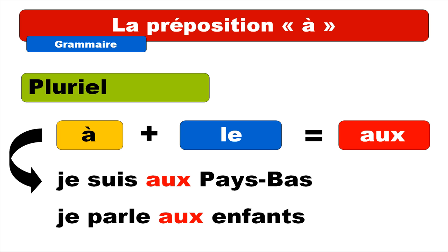So in the first sentence you don't really need to make any liaison between AUX and Pays-Bas, because as you can see Pays-Bas is starting with P. But then we will have to make the liaison between SUIS and AUX. Je suis aux Pays-Bas. Repeat: je suis aux Pays-Bas. And then the second one — you will have to make the liaison between AUX and ENFANT. Je parle aux enfants. Repeat: je parle aux enfants.